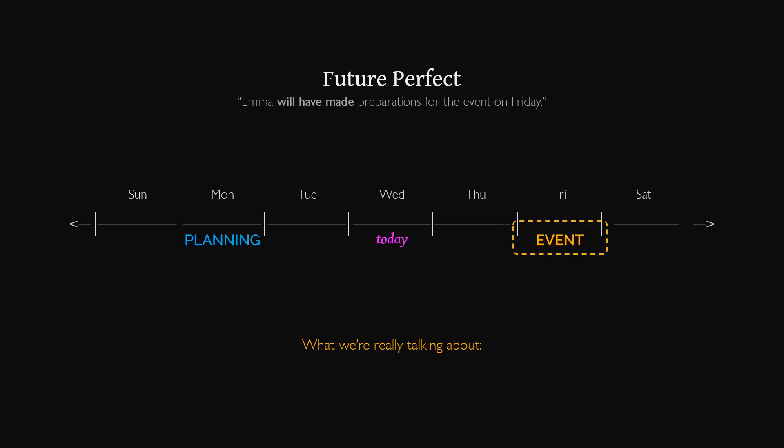If on the other hand, the context is set around Friday's event, then we should use a future tense. This time we're not talking about Emma's planning process, but about how the upcoming event will be affected by her plans. Maybe we suspect that the event will go very smoothly because of all the planning that Emma did.